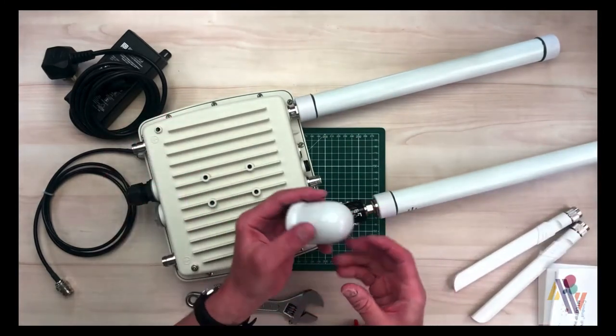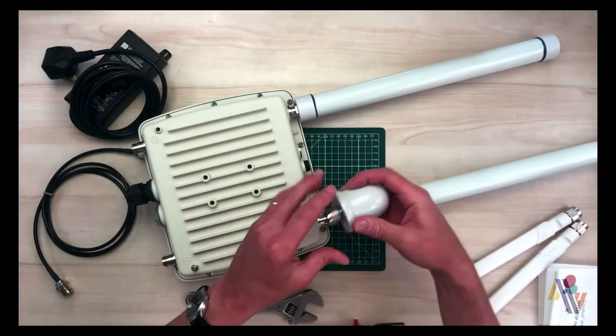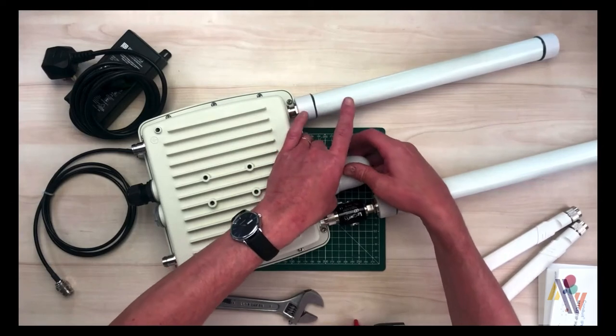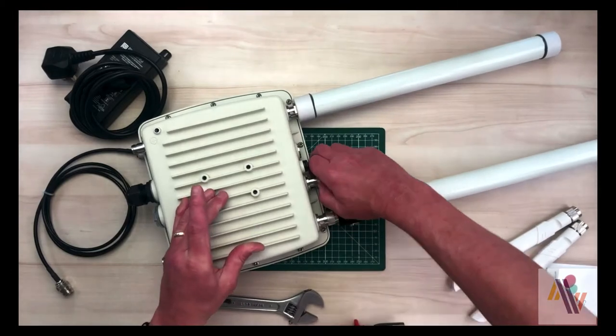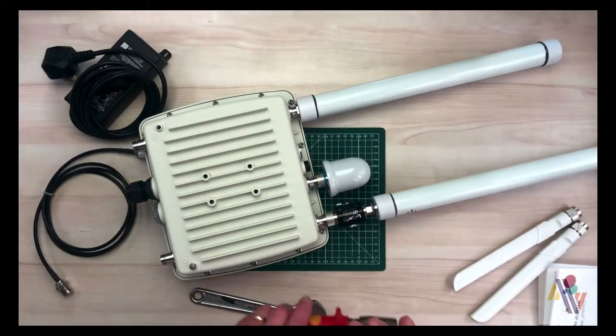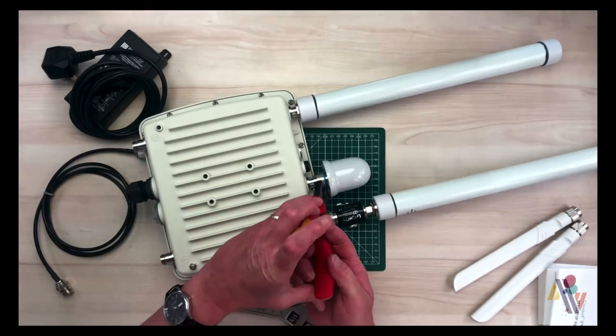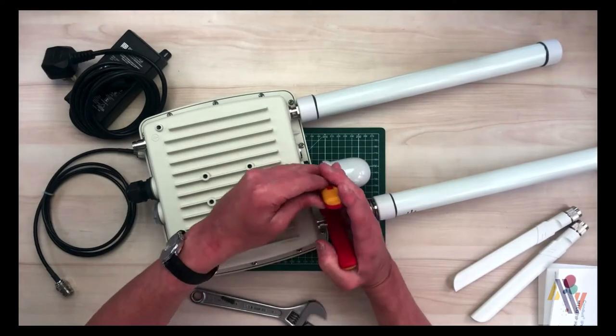Now we take our GPS antenna and tighten in a similar way. Again using the pliers to get a final one-eighth of a turn or so to ensure a good watertight connection.